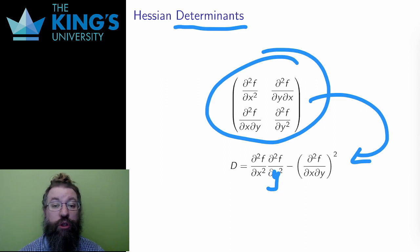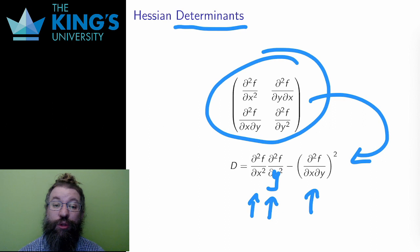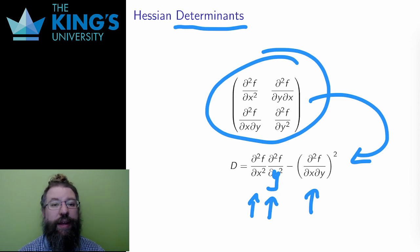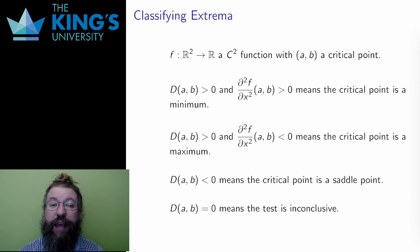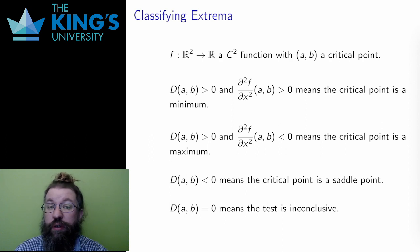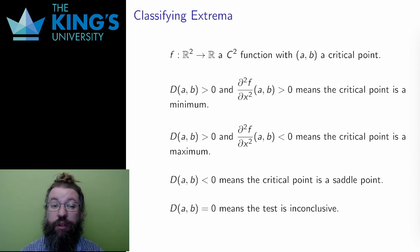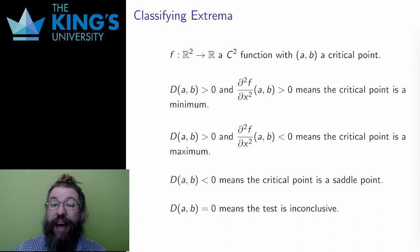The Hessian determinant is the product of the two pure partials minus the product of the mixed partials. Assuming the conditions of Clairaut's theorem — which will always be true for examples in this course — the mixed partials are equal, so the second term can be written as either mixed partial squared. The Hessian determinant D is very much like a measure of concavity. For single variable functions, the second derivative directly measured concavity. For parametric curves, concavity is like curvature — the direction the path was curving and how tightly it was curving — and curvature was indeed a second derivative. In general, I like to conceptually think of concavity and curvature as what all these second derivatives are talking about.